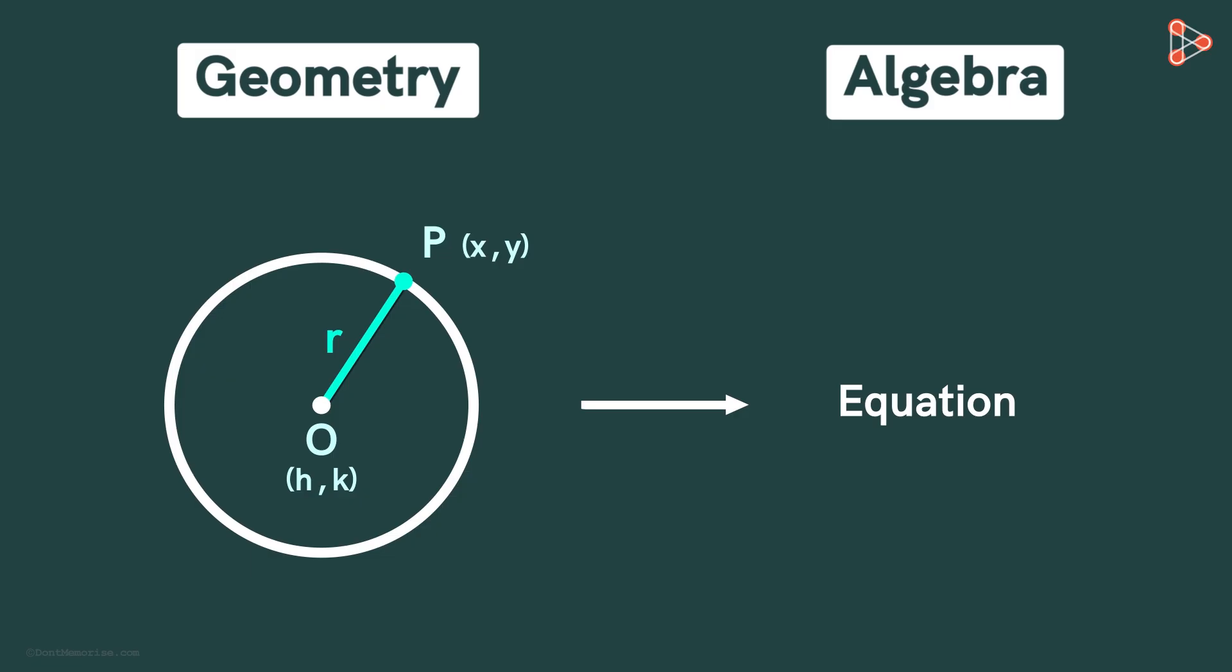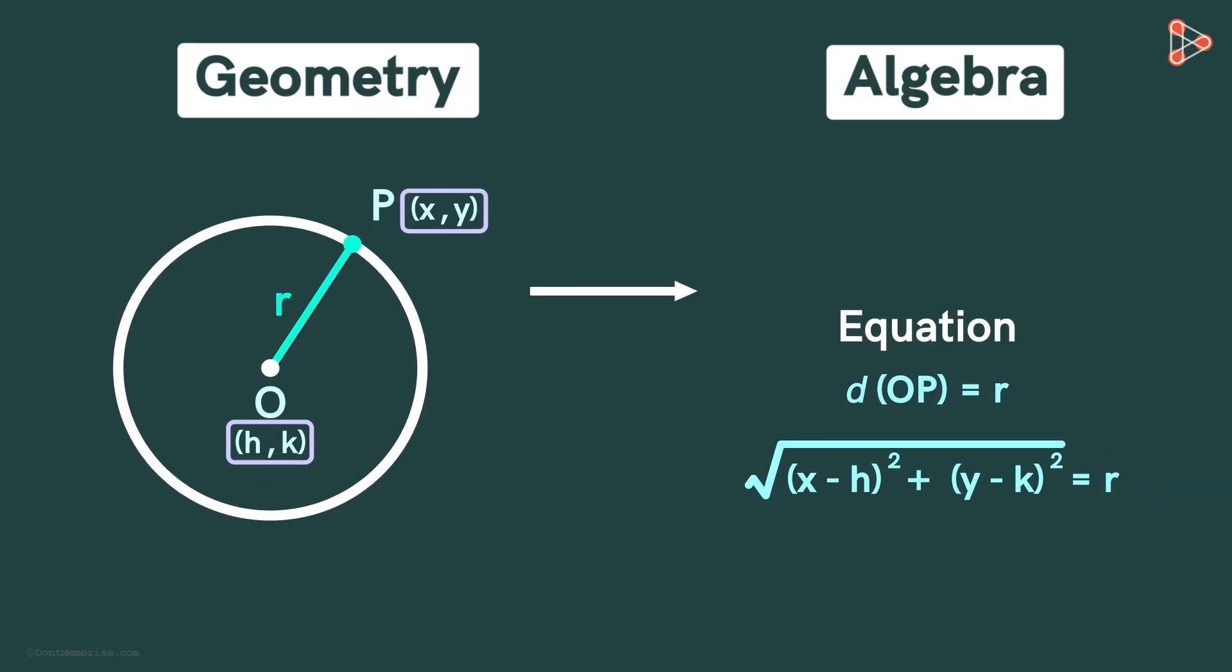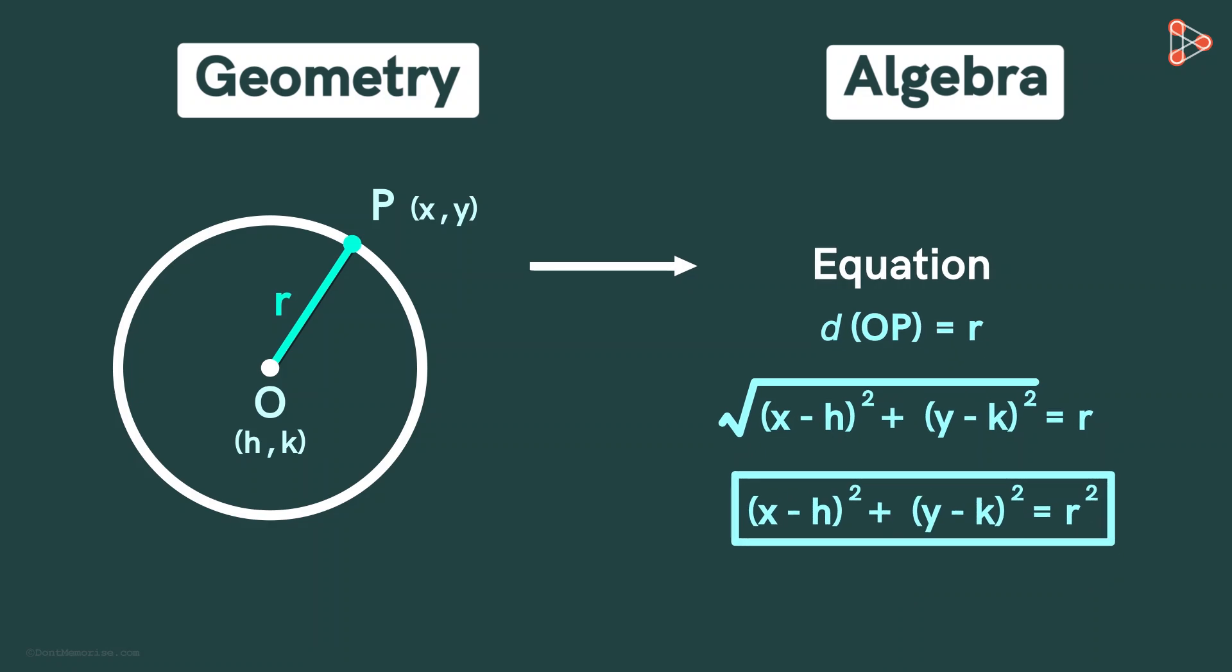So the distance between points O and P is nothing but the radius. But how do we find the distance between the points O and P? Since we know the coordinates of O and P, we can find the distance OP using the distance formula. So we get this. Squaring both the sides, we get this. This is the general equation of the circle.